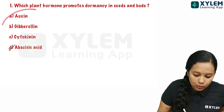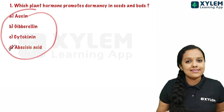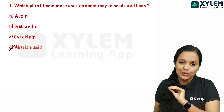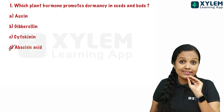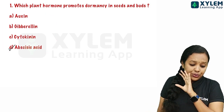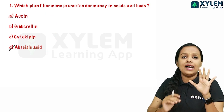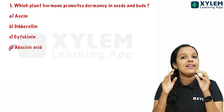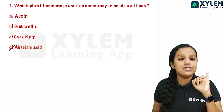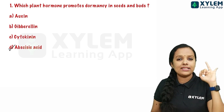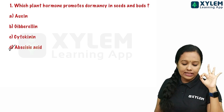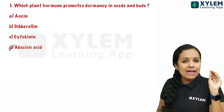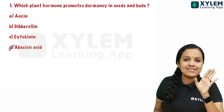If you have a question about plant hormones, the plant hormones are: auxin, gibberellin, cytokinin, and abscisic acid. You will learn how to identify the plant hormones from these options.